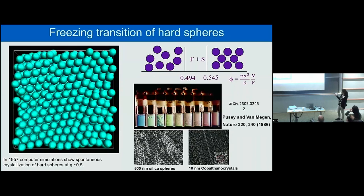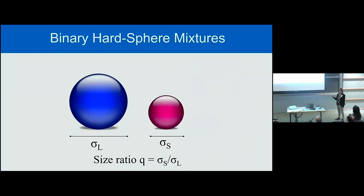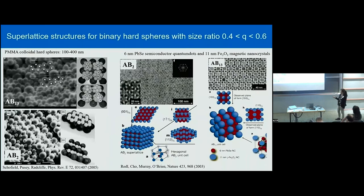Later on, many other colloidal crystals were formed — from silica spheres, carbon nanocrystals, semiconductor particles, and so on. One can increase the structural diversity of these structures by just playing with two size ratios, for instance by mixing big spheres together with small spheres. Then you can already get many different exotic crystal structures.